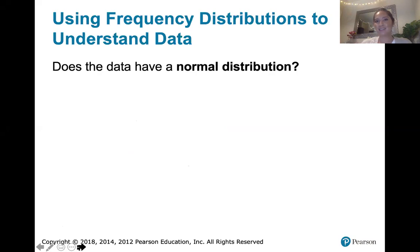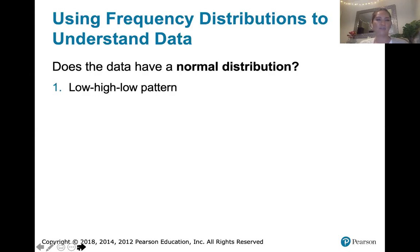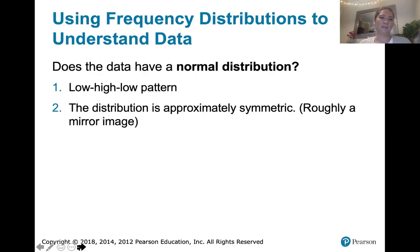We will be able to see if our data set has that shape just by looking at the frequency distribution — if you see that low-high-low pattern in the numbers themselves in your frequency distribution table. If the numbers start low, go to a high frequency, and then return to low numbers as you go through the classes, the data might have a normal distribution. That distribution would also have to be approximately symmetric, roughly a mirror image. The frequencies below and above the high point should be roughly the same.